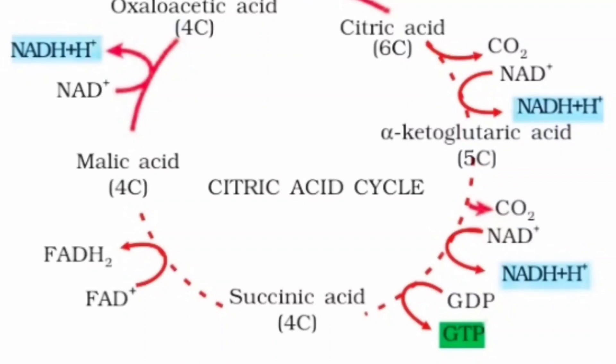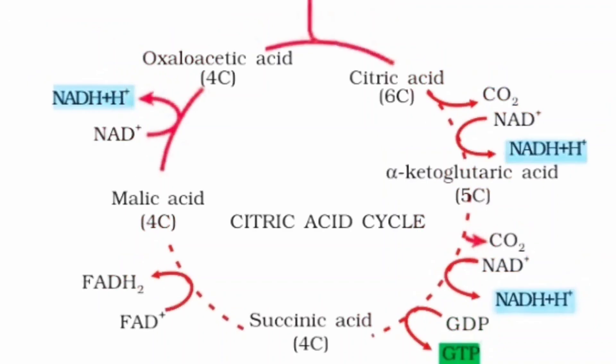Now let's deal with the total net gain of ATPs. The result of one turn of the Krebs cycle gives us three molecules of NADH + H⁺, one molecule of FADH₂, one molecule of GTP, and two molecules of carbon dioxide. Since there were two pyruvate groups entering the reaction, on average we get six molecules of NADH + H⁺, two molecules of FADH₂, two molecules of GTP, and four molecules of carbon dioxide.